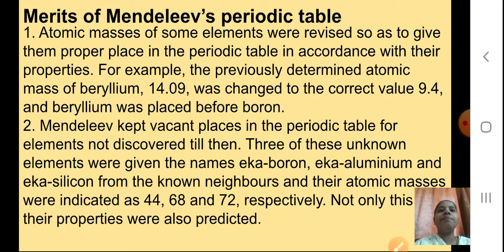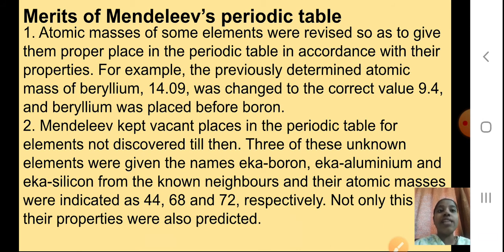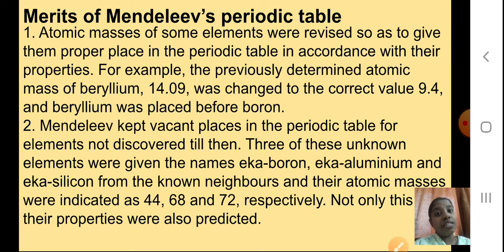Now we will see the merits of Mendeleev's periodic table. The atomic masses of some elements were revised — he studied them again so as to give them proper place in the periodic table in accordance with their properties. For example, the previously determined atomic mass of beryllium, 14.09, was changed to the correct value of 9.4 and beryllium was placed before boron. He corrected atomic masses and tried to place elements in the correct order. Mendeleev also kept vacant places in the periodic table for elements not discovered till then.